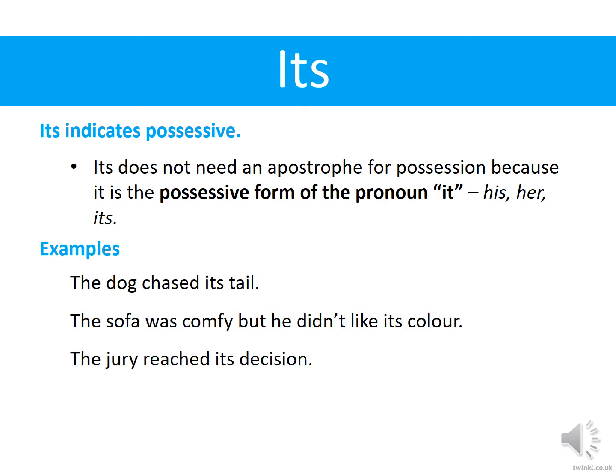Let's look at some examples. 'The dog chased its tail.' The tail belongs to the dog — the dog obviously owns the tail, it's his tail. So: 'The dog chased its tail.' Placing 'it is' or 'it has' in there wouldn't make sense: 'The dog chased it is tail' or 'The dog chased it has tail' — neither of those makes sense. You can check it.